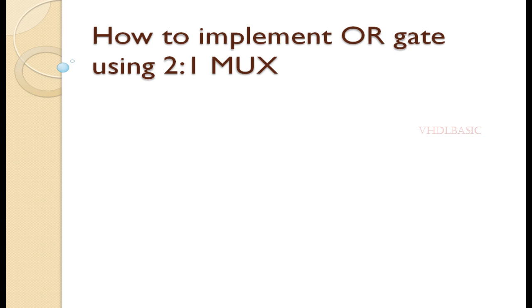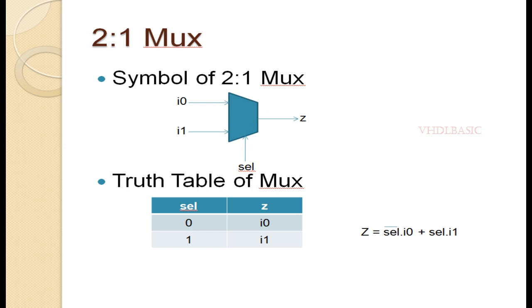Welcome to VHDL basics. Today we are going to see how to implement an OR gate using a 2-to-1 MUX. This is the 2-to-1 MUX symbol diagram where I0 and I1 are inputs, select is the select line, and Z is the output. From the truth table, whenever select is 0, I0 is assigned to Z; whenever select is 1, I1 is assigned to Z. The MUX expression is: Z equals (not select AND I0) OR (select AND I1).